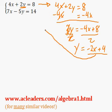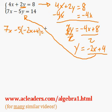I can replace the negative 2x plus 4 for the y over here. So I will get 7x minus 5 bracket negative 2x plus 4 equals 14.